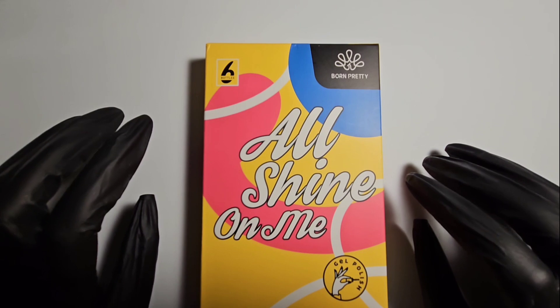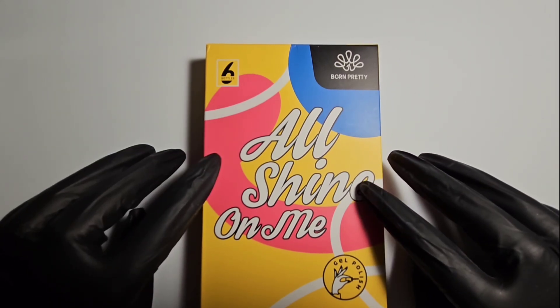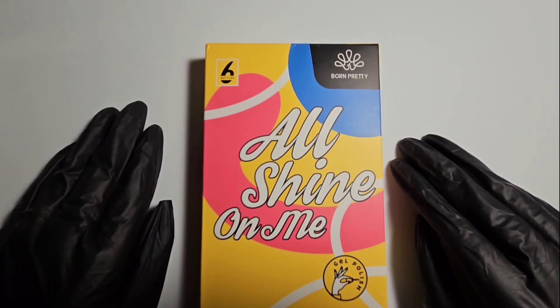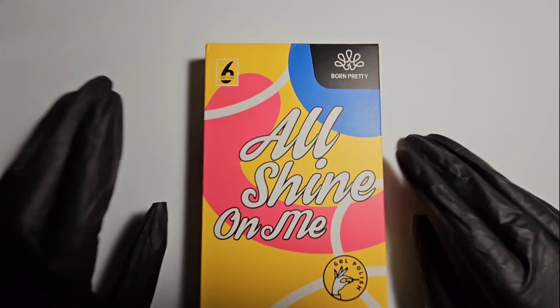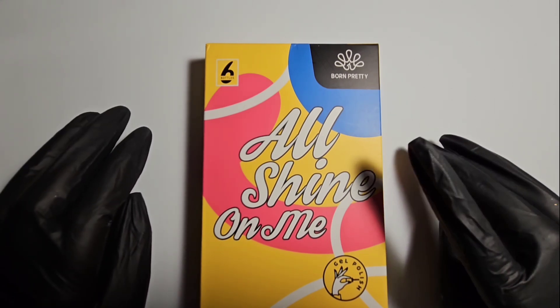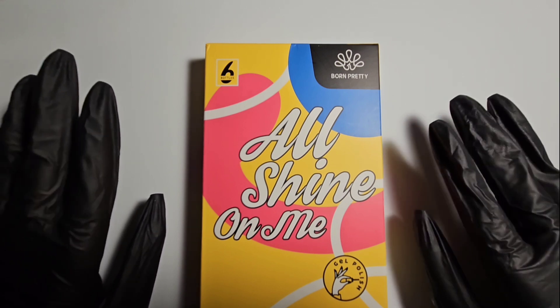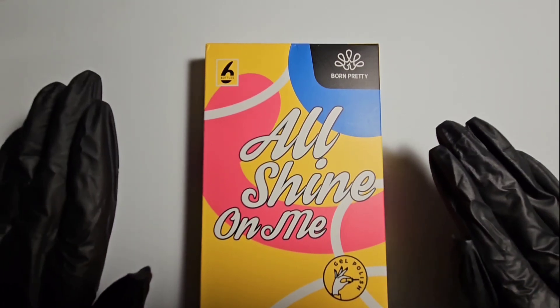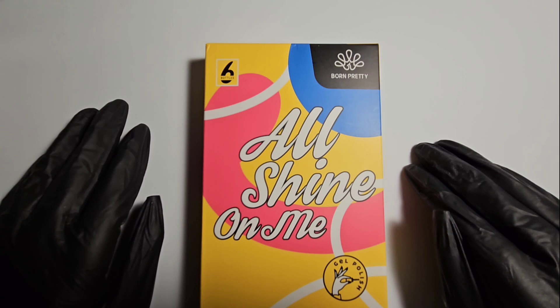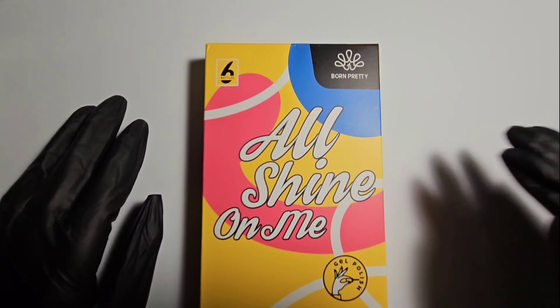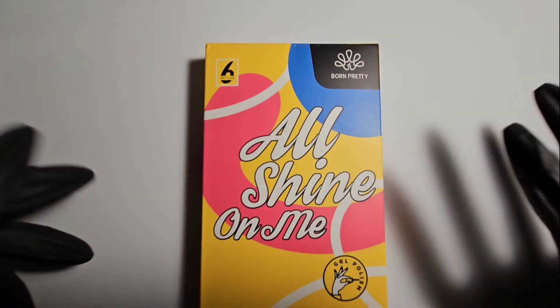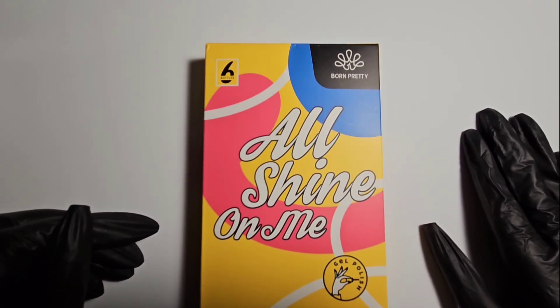I would finally get these gel polishes swatched. They've been sitting here for about three weeks since I ordered them myself from Amazon. They are from Born Pretty, they are magnetic and reflective glitter, and they looked gorgeous online. So I thought that we'd just do a little swatching and see how they look in person. Let me get everything out and set up and we'll get that started.